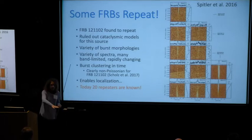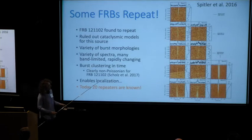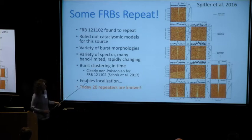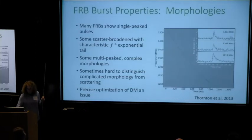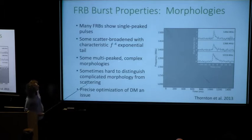Apart from that, repeating also does something very important: it enables localization. Not that some telescopes like ASKAP can localize in real time, but for repeaters, as long as you're patient, you can go to an interferometer and look. I'll talk about that shortly. As an overview, let me go through different aspects of the burst morphology phenomenon.